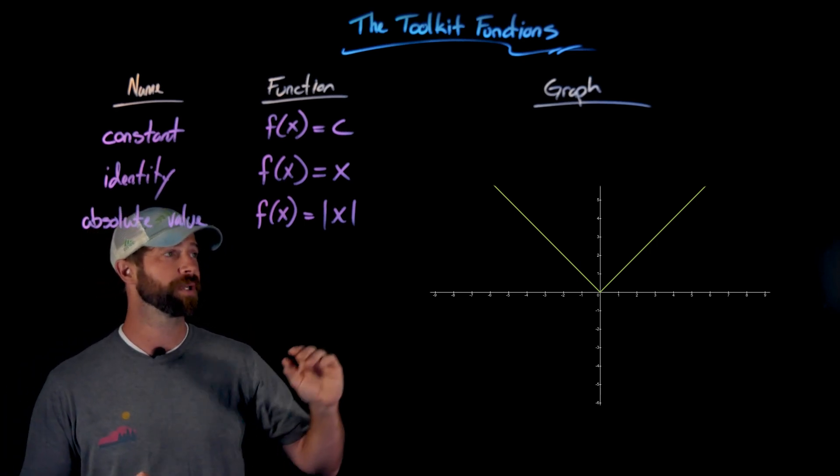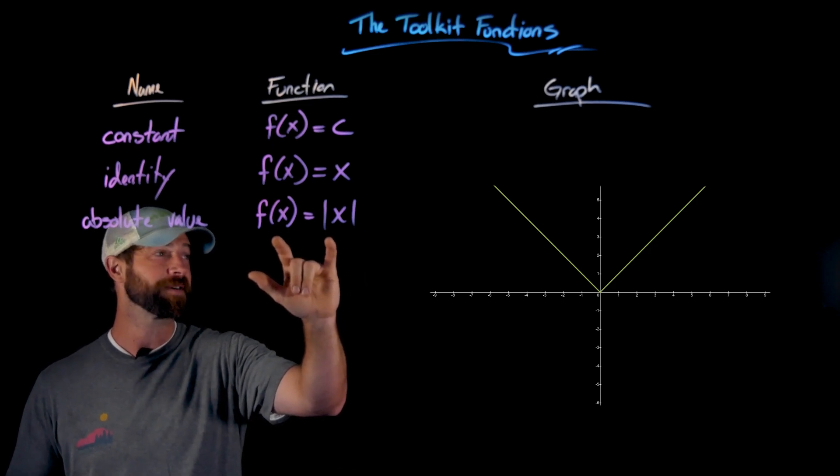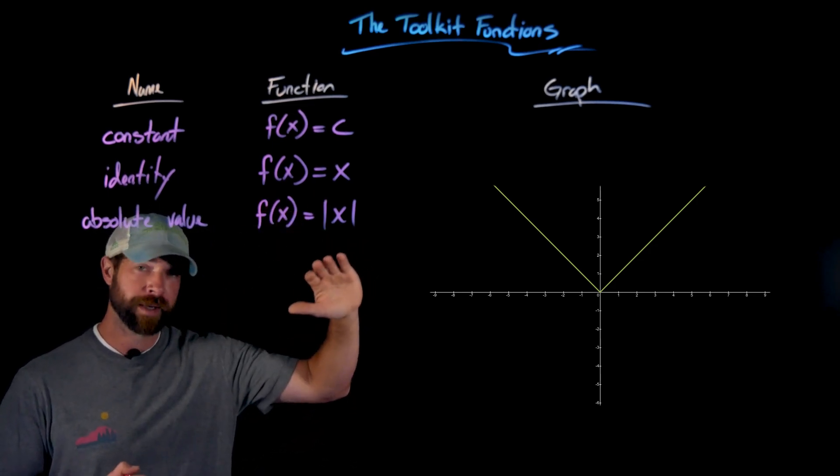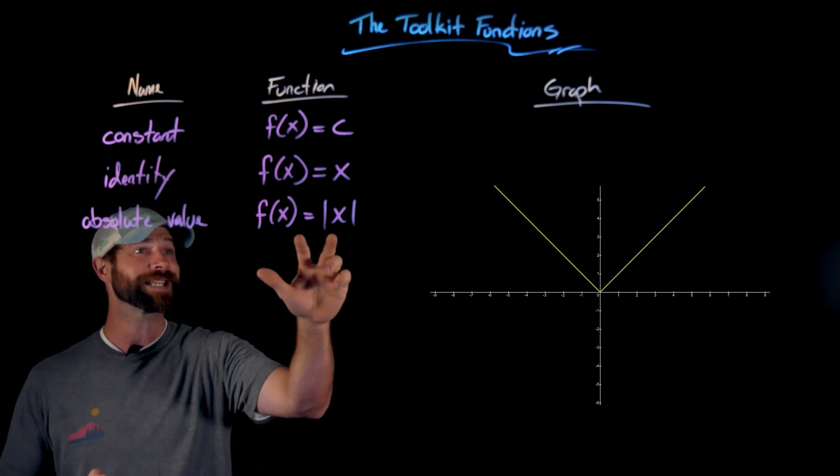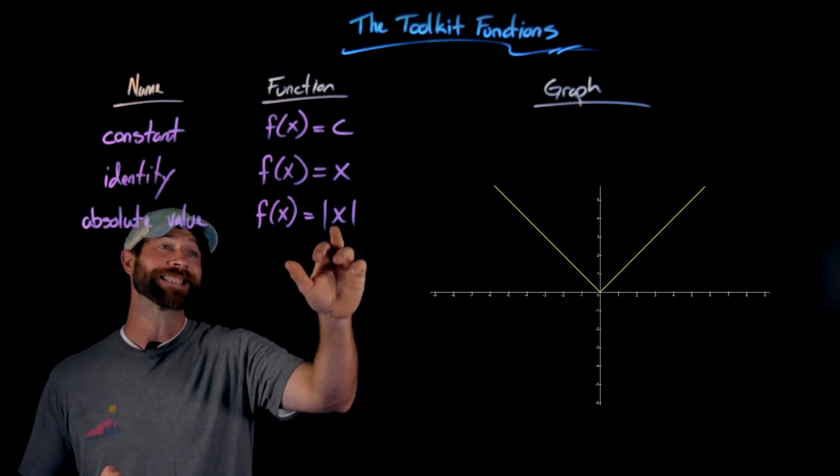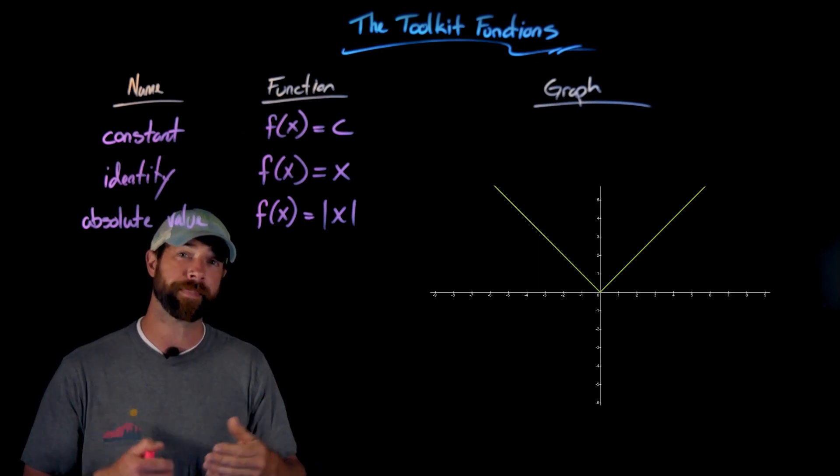What you'll notice importantly here is in the first quadrant, when we have positive x values, this function is actually identical to the identity function. But at zero there's a significant change. For negative x values, this function acts like f(x) equals negative x, because it takes negative x values and turns them positive or finds the opposite.